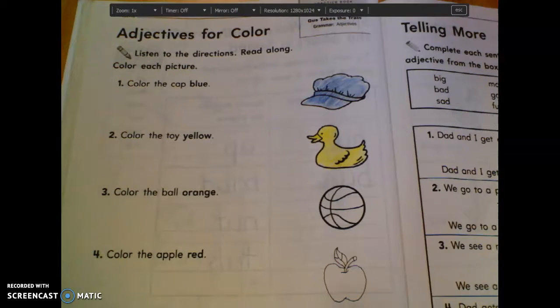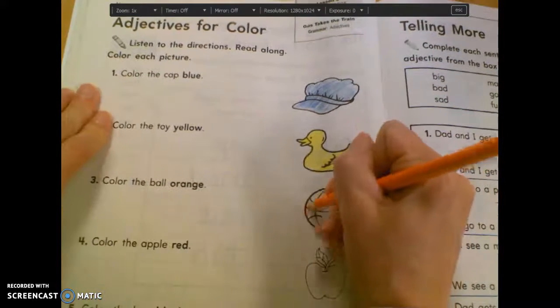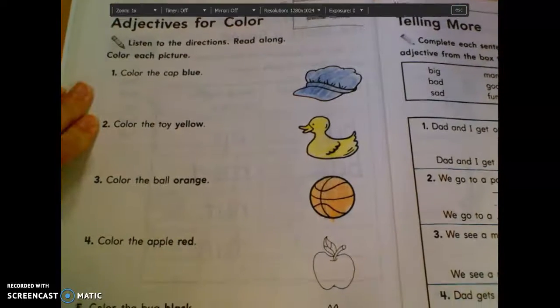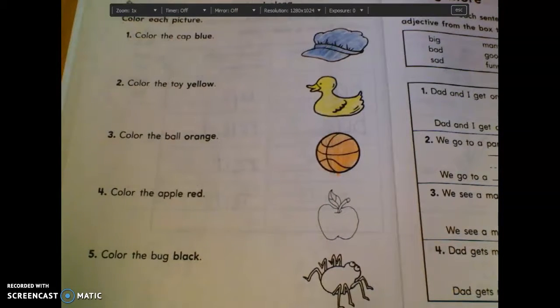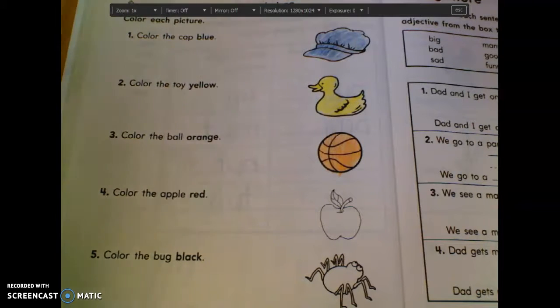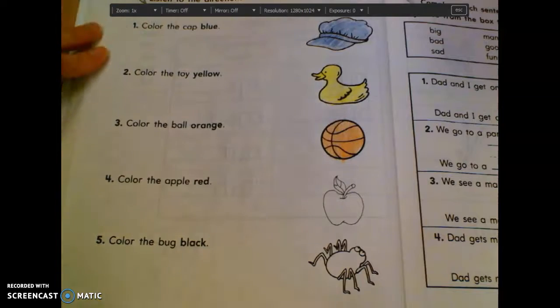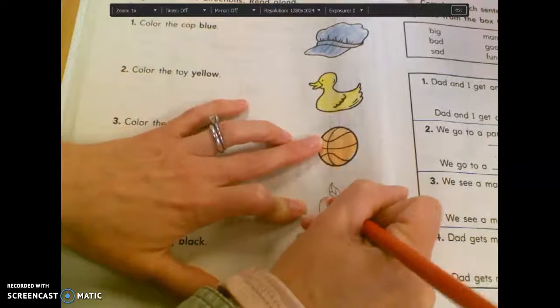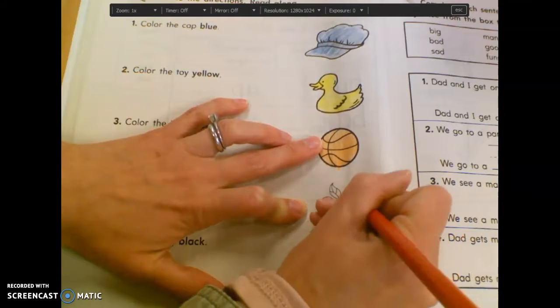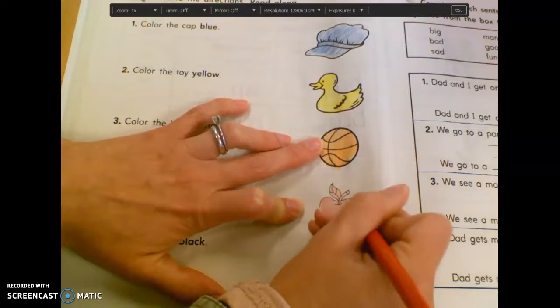Number three says to color the ball orange. Color the basketball orange. Number four. What does that say? Can someone read that one for us? Mason. Number four. That was number three. What about number four? Color the apple red. Good. You can go quick, but still take your time. If you take your time, you do a good job.